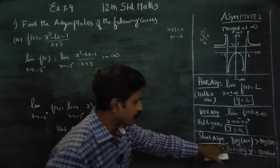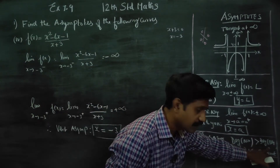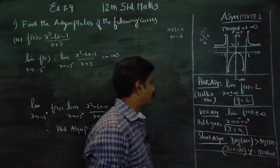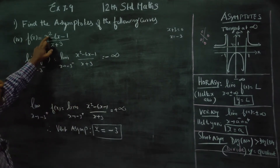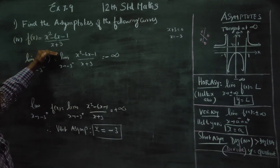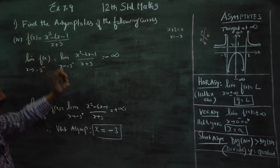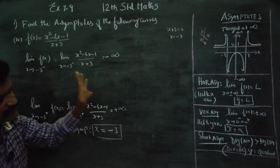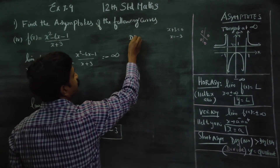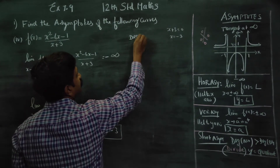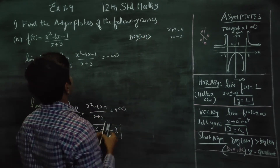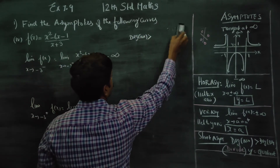It is a matter of degree. The degree of the numerator must be greater than the degree of the denominator for a slant asymptote to exist. Here, the degree of the numerator is greater than the degree of the denominator.